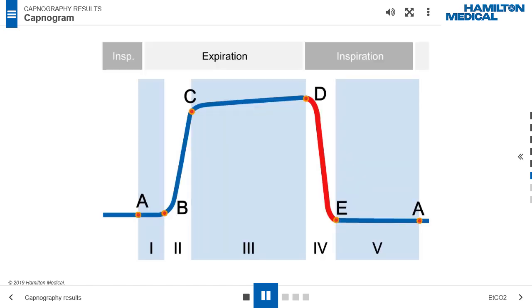Phase 4, D to E, when inspiration starts, the CO2 value drops rapidly to zero as CO2 free inspiratory gas passes the sensor.